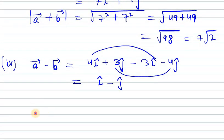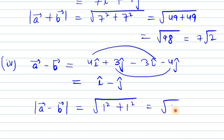Now we need to find the magnitude of a minus b. So it will be under root 1 square plus 1 square. So 1 square plus 1 square equals under root 2. So under root 2 unit is the answer for the fourth one.